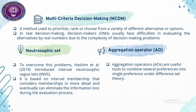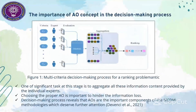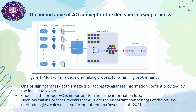Aggregation operators are useful tools for fusing multiple arguments into a single comprehensive value and they have raised great attention among scholars. This is the multicriteria decision making process and the importance of aggregation operator concepts in decision making. One of the key tasks is to aggregate all information content provided by the individual experts. Choosing the proper aggregation operator is important to hinder information loss, and it reveals that aggregation operators are important components of MCDM methodologies which deserve further attention.